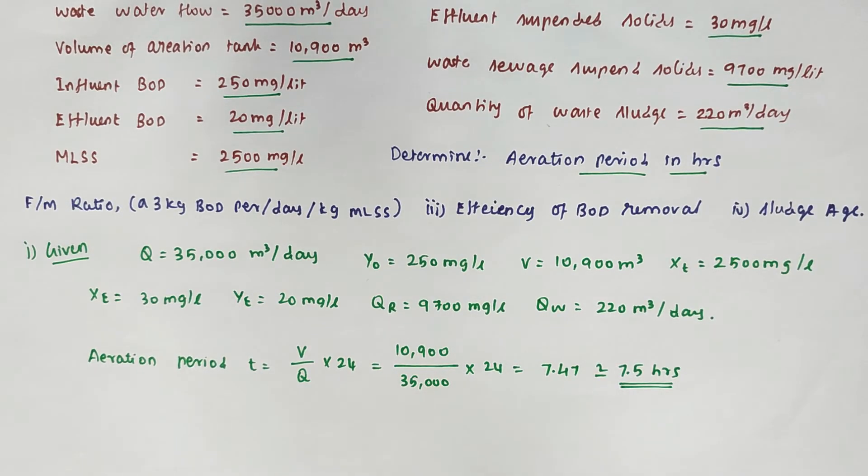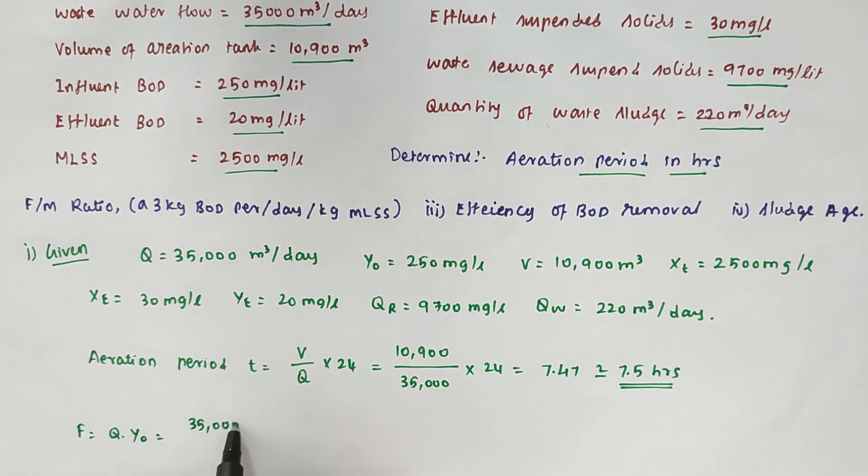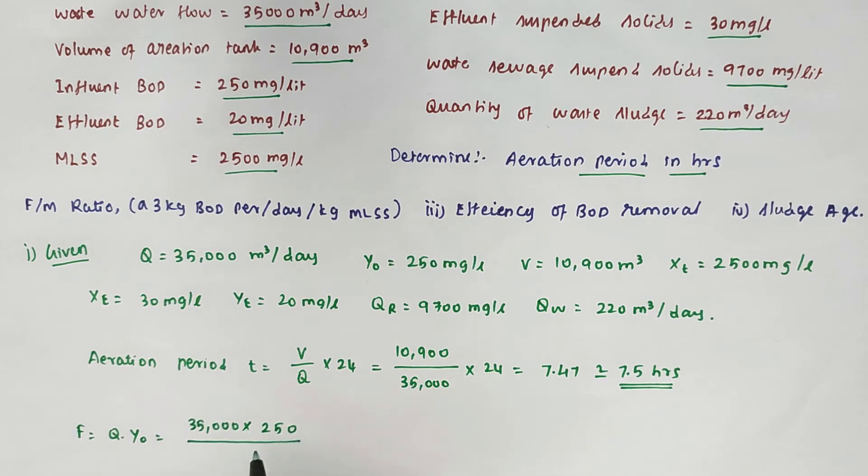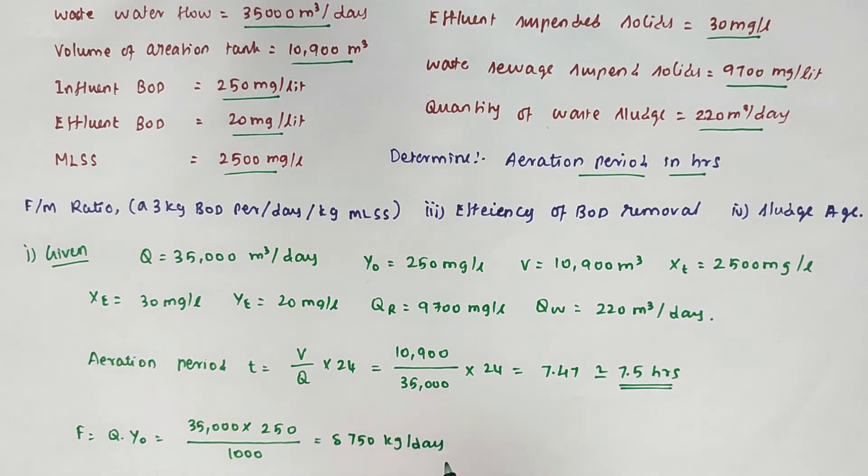Second thing is food by microbial ratio. F equals Q times Y₀, that is 35,000 times 250. We can convert it into kg per day, so we put 1000. 1000 kg equals 1 m³, so that is 8750 kg per day.